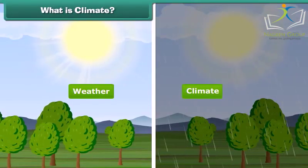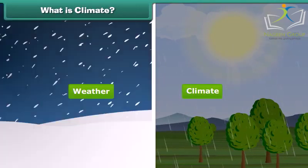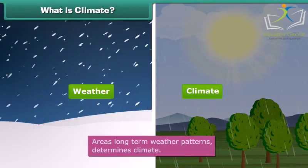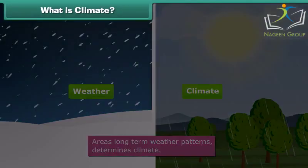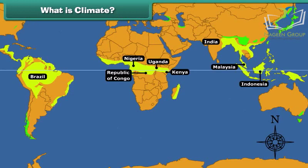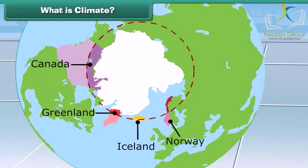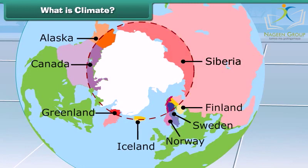Is weather and climate the same? No. An area's long-term weather patterns determine its climate. For example, areas near the equator have a warm climate and the areas near the poles have a much colder climate. So children, now you can easily differentiate weather from climate.